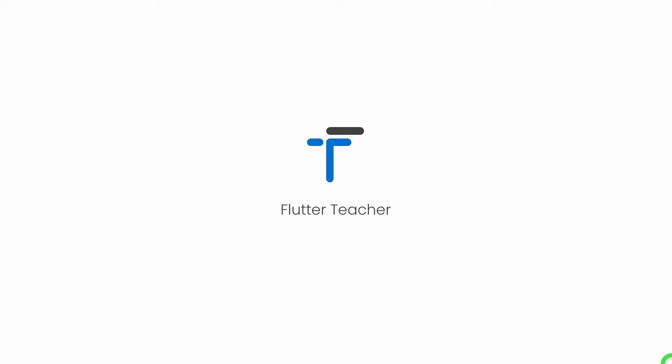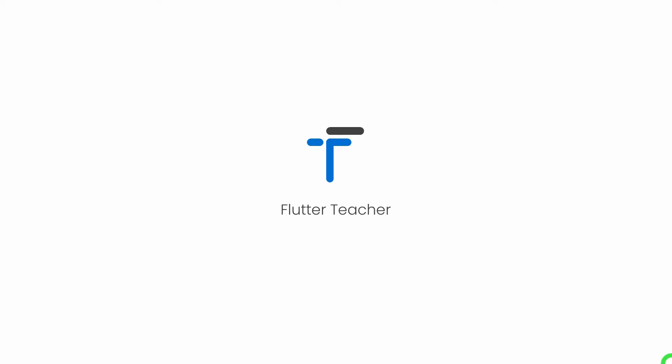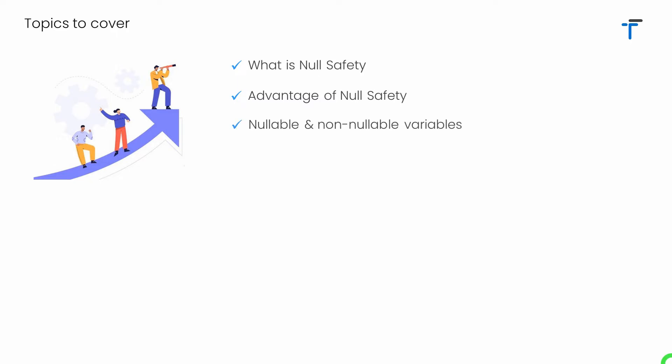I request you guys, don't forward this video. Watch the video till the end and try to understand each and every concept in detail. So before I start, let's understand the topics I will cover: what is Null Safety, advantages of Null Safety, nullable and non-nullable kinds of variables, and finally the late keyword in Dart. So without wasting time, let's get started.